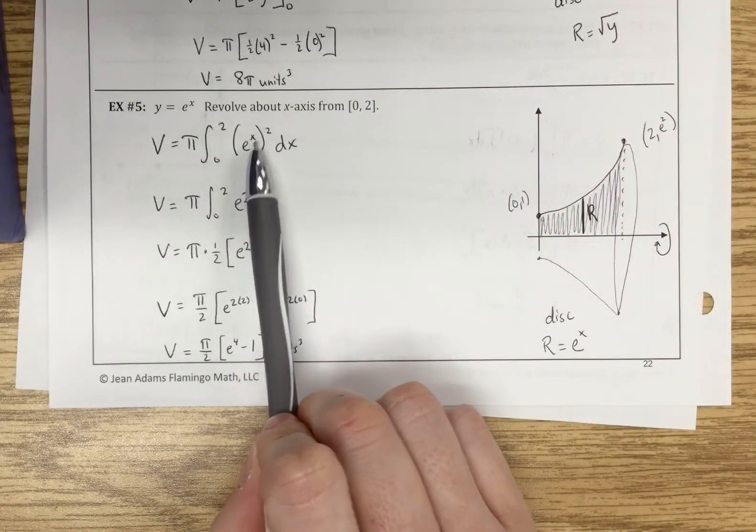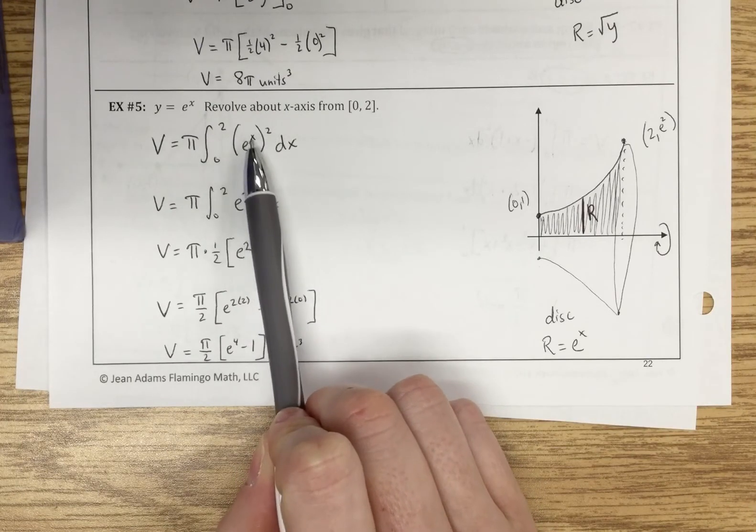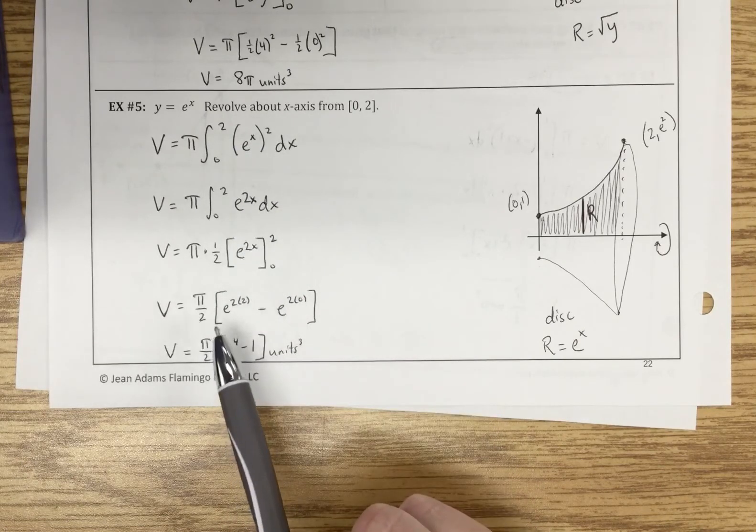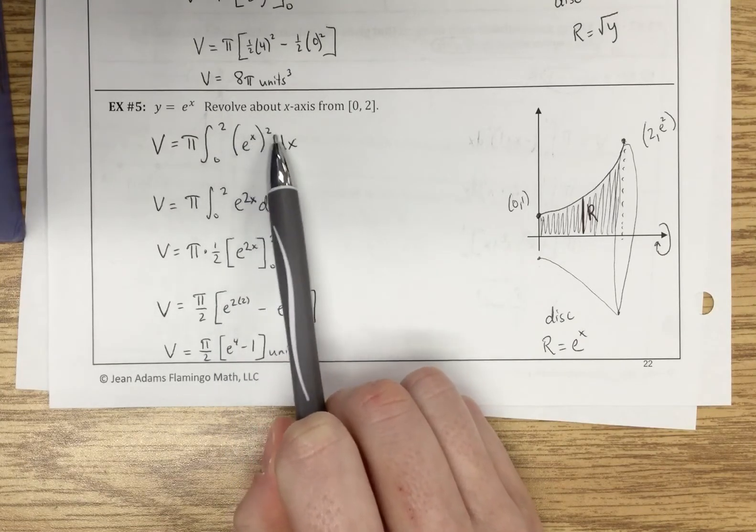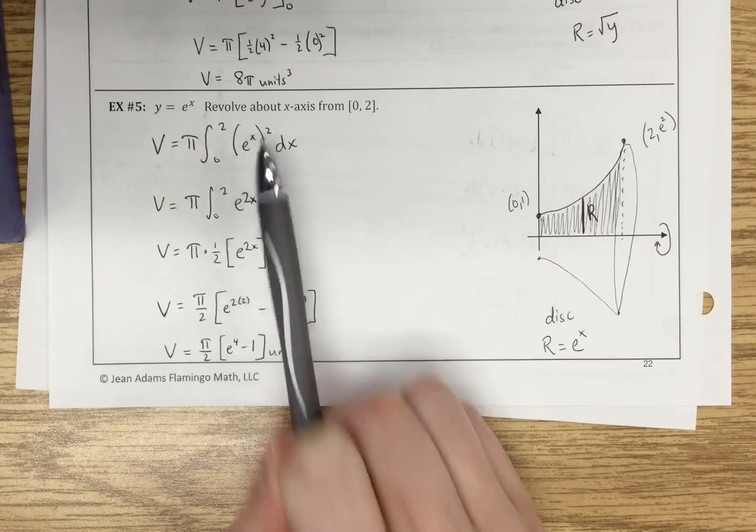Fun, interesting note here, we have e to the x squared, so that's actually not e x squared. It's actually going to be e to the 2x. I have an exponent and I am raising it to an exponent, which means I'm going to multiply the exponents.